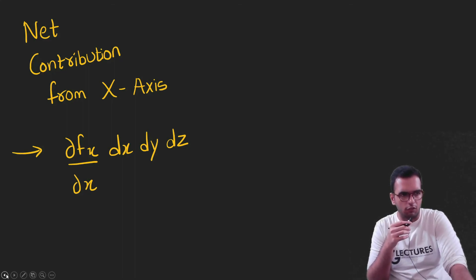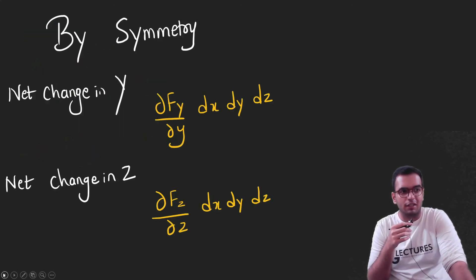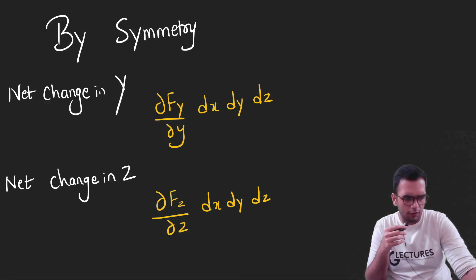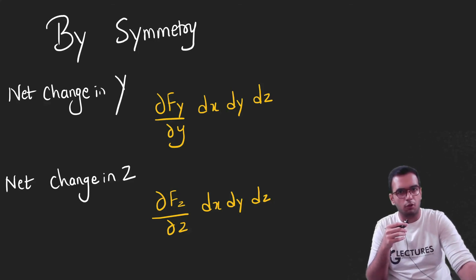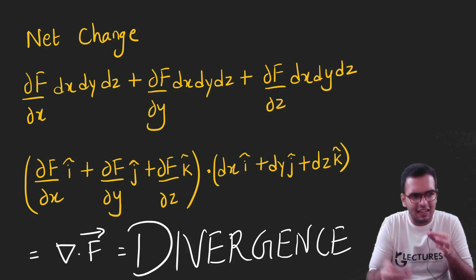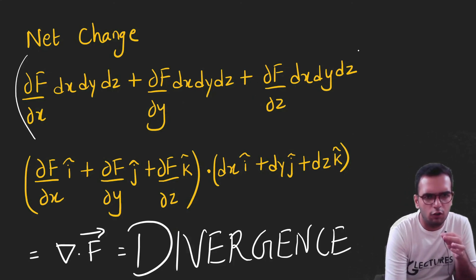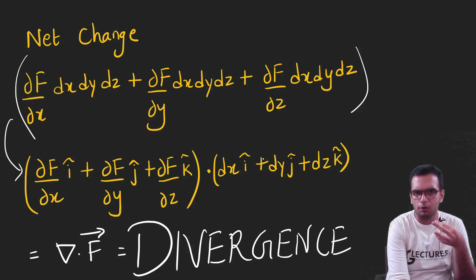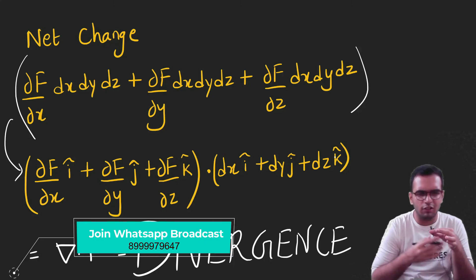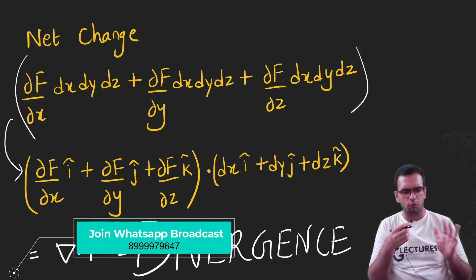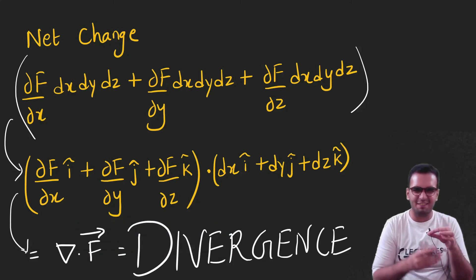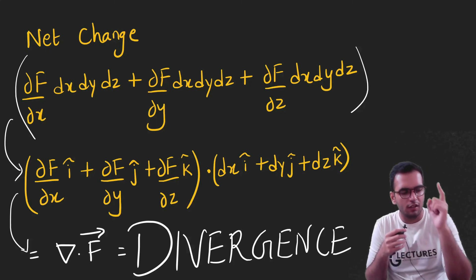I intentionally ignored y and z contributions earlier. When the fluid flows through the y-axis, I get a similar term by symmetry, and the same for the z-axis — everything in physics is symmetric. The net change is the addition of all three contributions. This can be written as the del dot F equation, because the unit vectors î·î, ĵ·ĵ, k̂·k̂ all equal one. And isn't this exactly the equation of divergence? So yes — this is the proof of divergence.